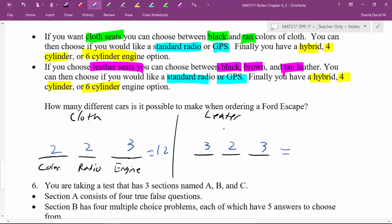So I have a total of 12 different types of Ford escapes that can be made using cloth seats. And then using the leather seats, three times two makes six, six times three is 18. So there are 18 different choices with leather. Now, the question is, how do these things go together? And logic will get you there. Logic gets you there.